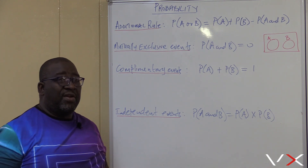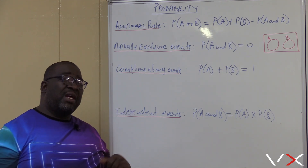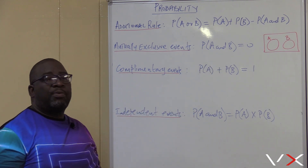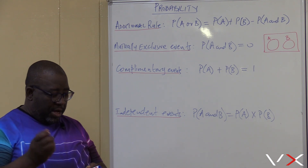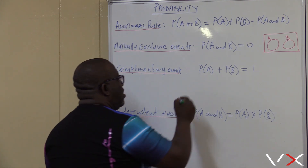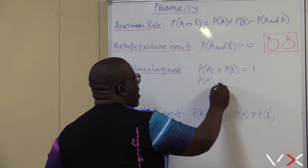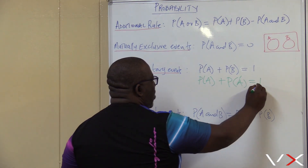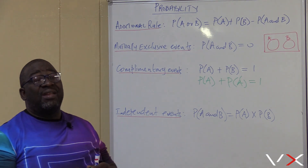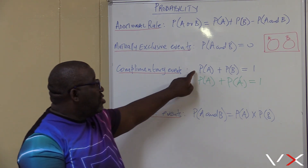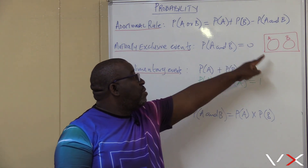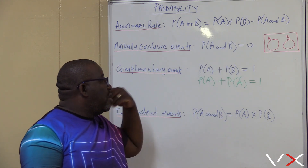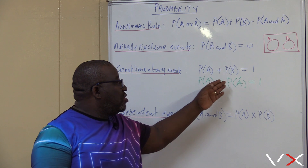Coming to this other event — complementary events — this becomes your keyword. If the examiner tells you that these are complementary events, this fact remains: the probability of A plus probability of B is equal to 1. Others will say probability of A plus probability of not A is equal to 1. This can be manipulated depending on what you are looking for. If you are looking for probability of A, it equals 1 minus probability of B. If you are looking for probability of B, it equals 1 minus probability of A.